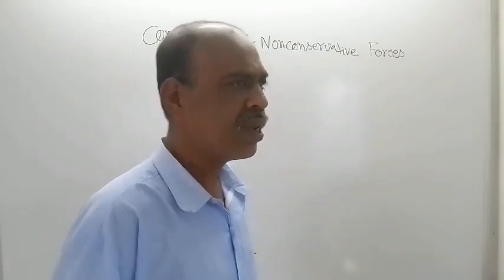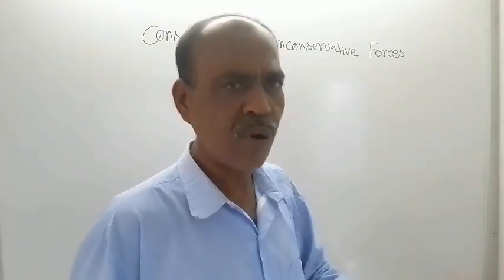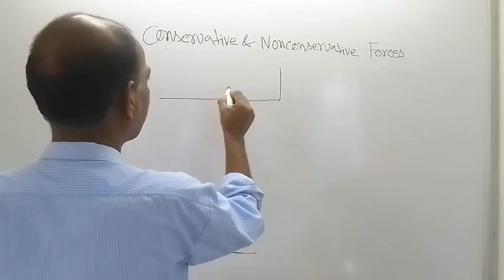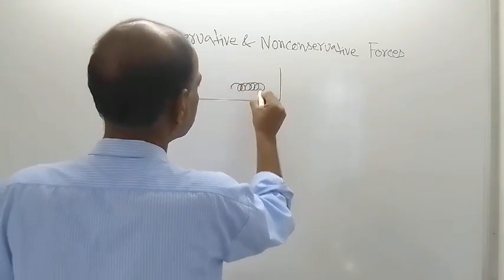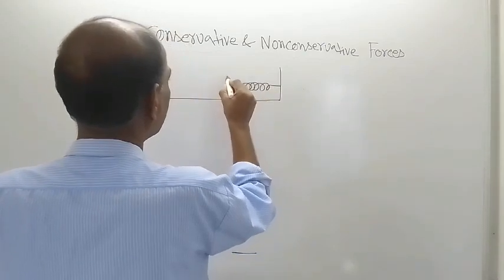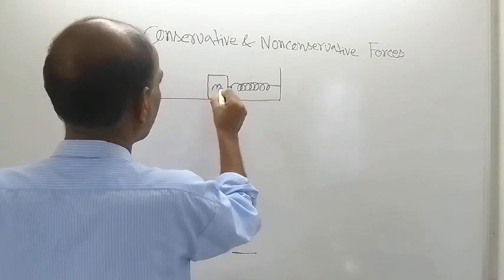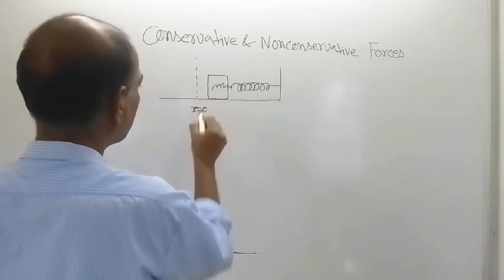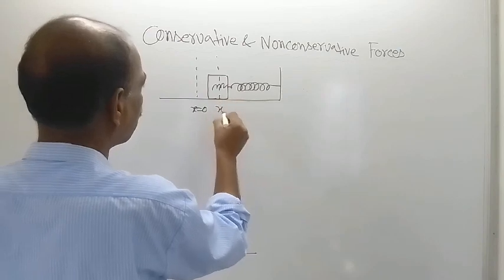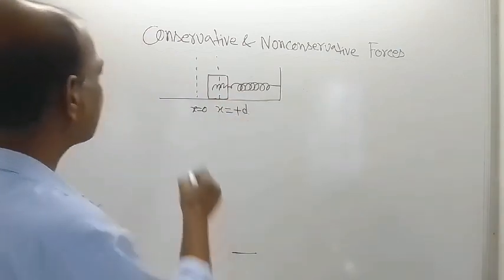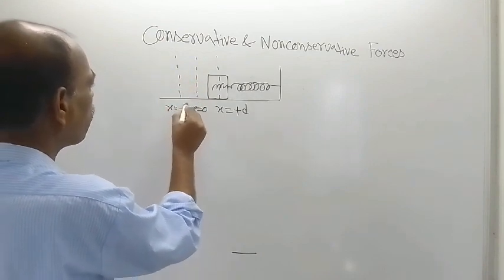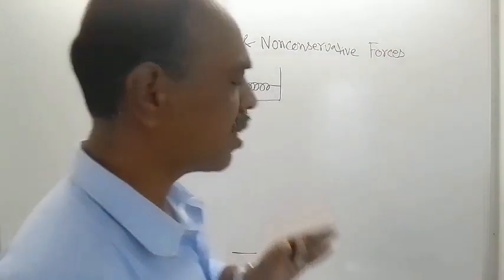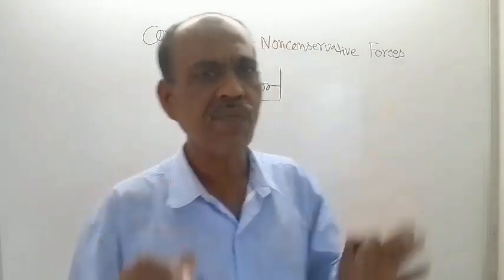To start with this topic, let us consider three types of forces. First is spring force. Suppose there is a flat surface with a spring tied at one end, and a block of mass m attached to the other end. We define three positions: x = 0, x = +d, and x = −d.